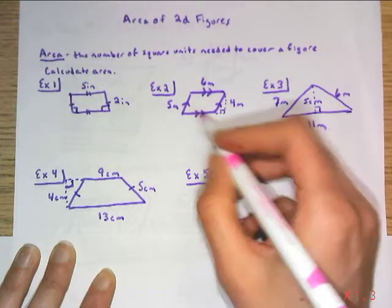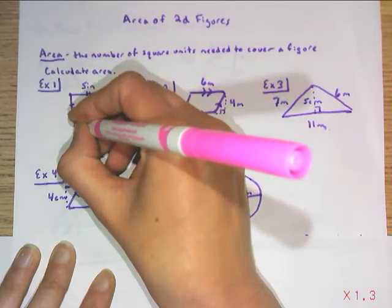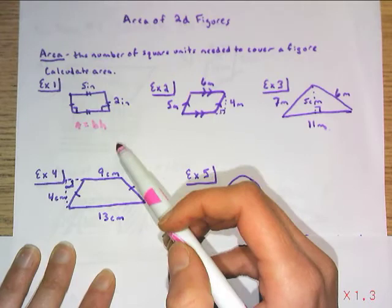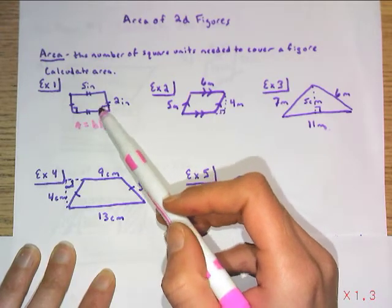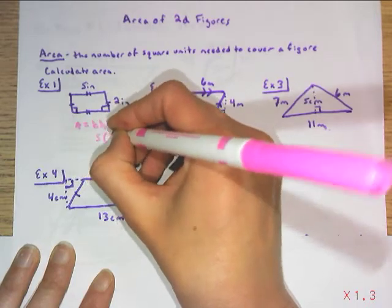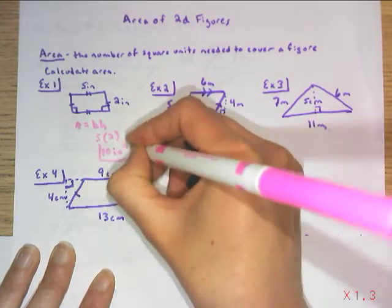So for our two rectangles and parallelogram here, we're using the formula area equals base times height. And remember the base and the height have to be perpendicular to each other. So you're looking for where the right angle is happening. So for here, we're just saying 5 times 2 would be 10 square inches.